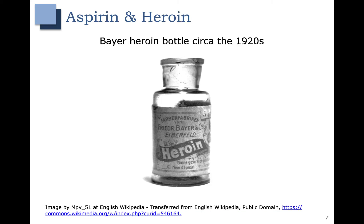Another interesting story is the story of heroin. Salicylic acid was converted to aspirin using a chemical reaction, and that same chemical reaction was then used on morphine — and when it was used on morphine, it made heroin. At the time, Bayer was really excited about this because they thought they had found a way to make morphine less addictive. We know today that that's not the case, but it's very interesting that the same chemical reaction that converted salicylic acid to aspirin converted morphine to heroin. If you stick with the full organic chemistry sequence, we'll learn about that chemistry and how it happened.